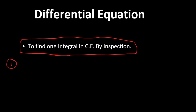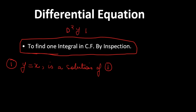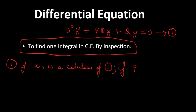Point number one: if y = x is a solution of the equation d²y/dx² + P(dy/dx) + Qy = 0 (equation one), then it will happen only if P + Qx = 0. Note that P here is a capital P.